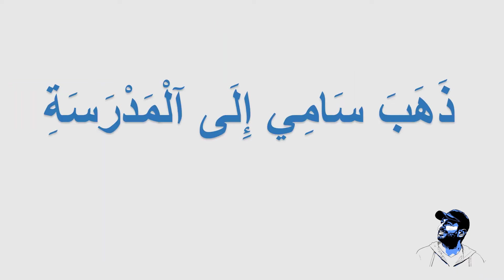Going back to our text: "Dhahaba Saami illa madrasa". The first thing you need to recognize are the words. The first word is "dhahaba", the second is "saami", the third is "illa", and the fourth is "madrasati". You can recognize them just by the spaces. Now we need to recognize the letters with their vowels. Some of them are easy — you see the space — and some are a bit connected, so you need to differentiate between letters.